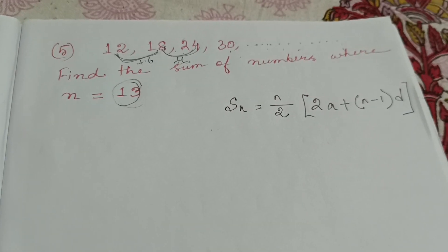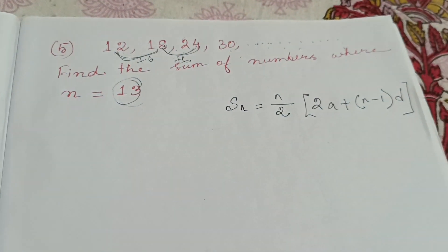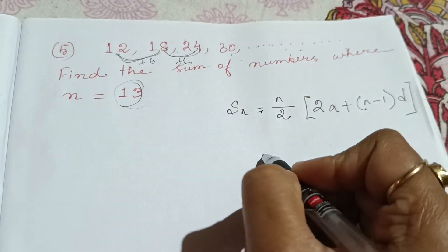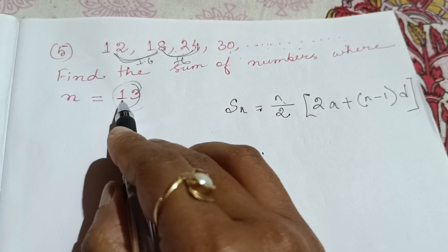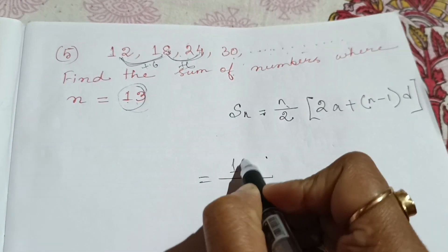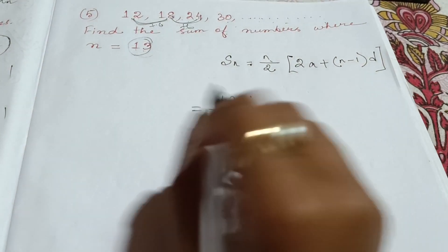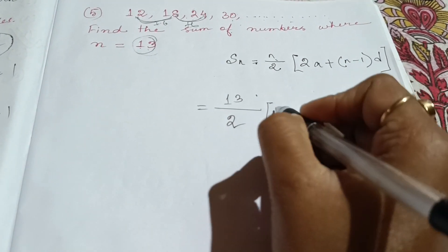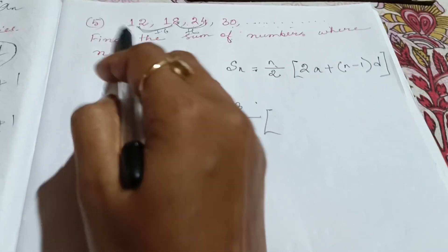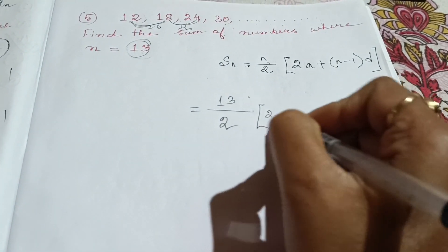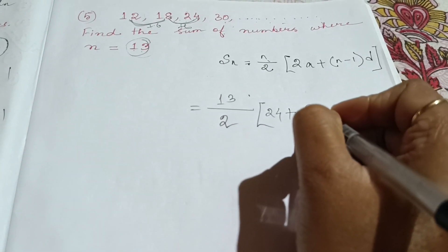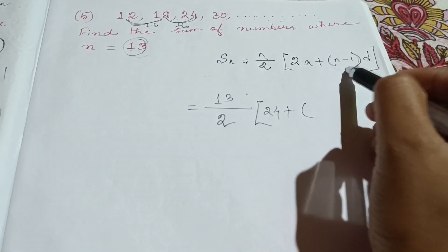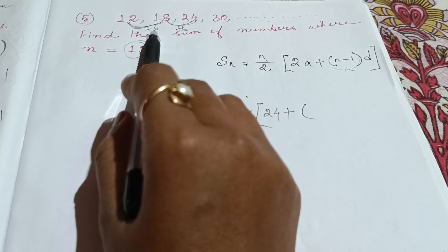You can apply this formula. In arithmetic progression, you can apply this formula. The formula involves n and d. The first study: a equals 12, plus n minus 1, equals 13 minus 1, equals 12. The difference is equal to 6.